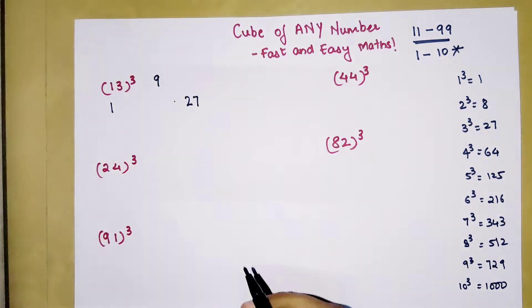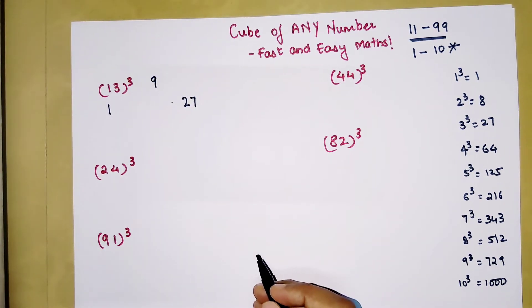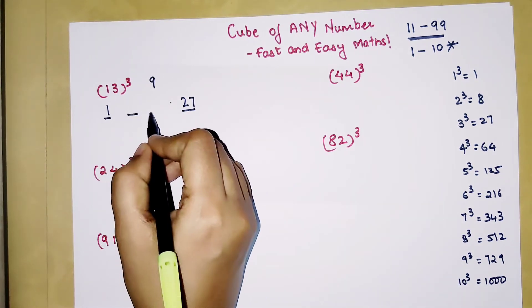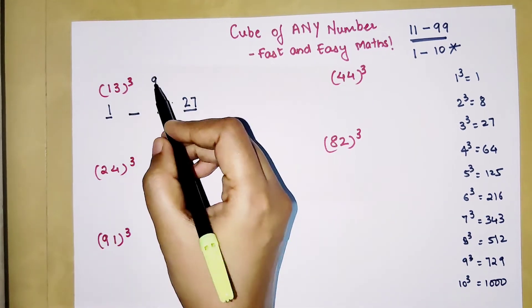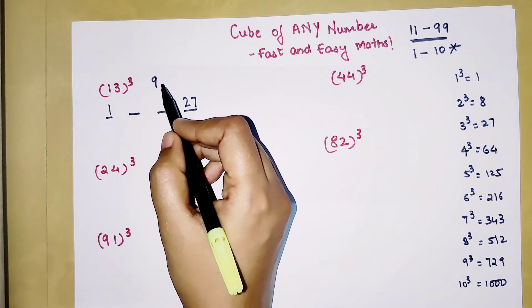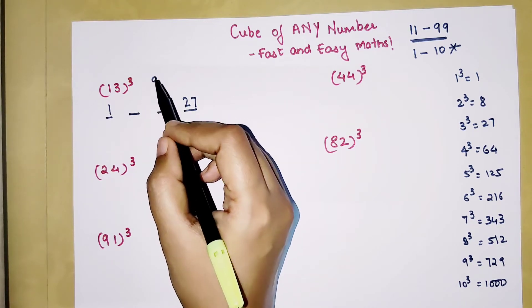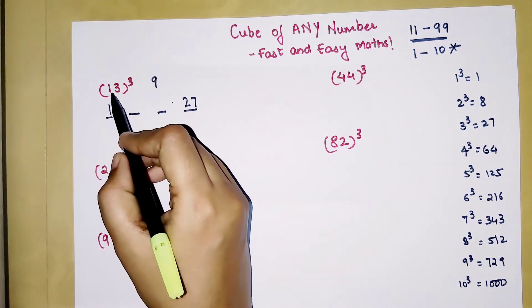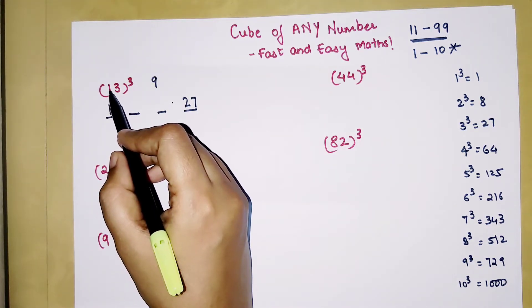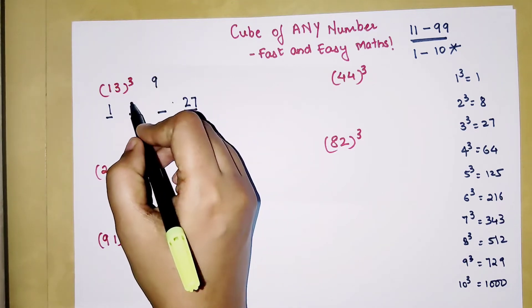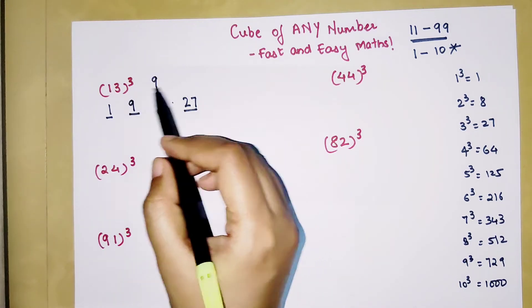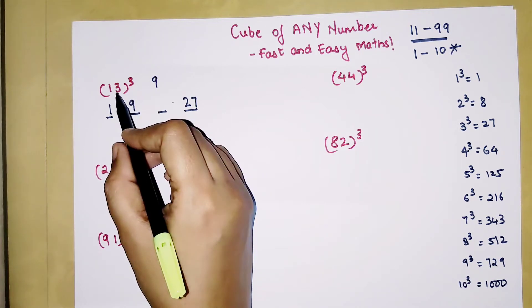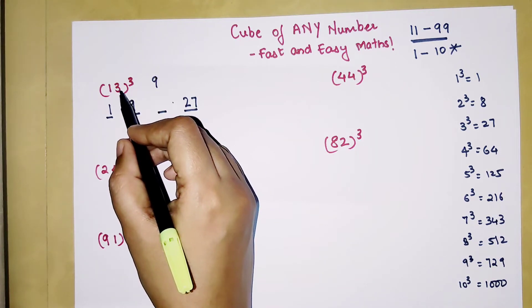Now this number is super important. Why? Because you have still 2 more blanks to be filled and that can be filled by using this number. What you have to do is to fill the first blank, you will multiply 9 with the first number in your question. So first number over here is 1. So 9 into 1 is 9. Similarly now next you have to multiply 9 with the last digit which is 3. So 9 into 3 is 27.